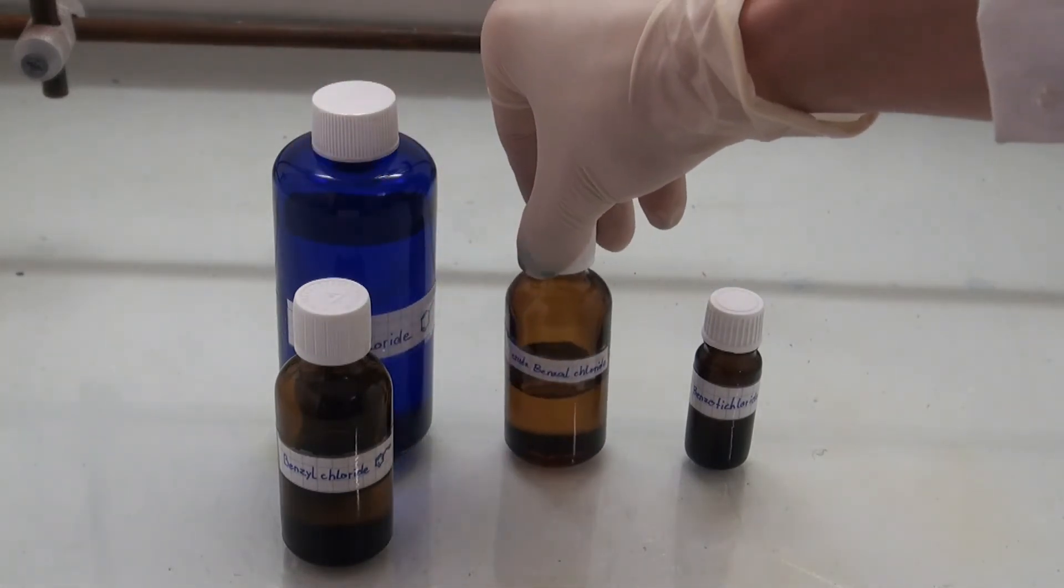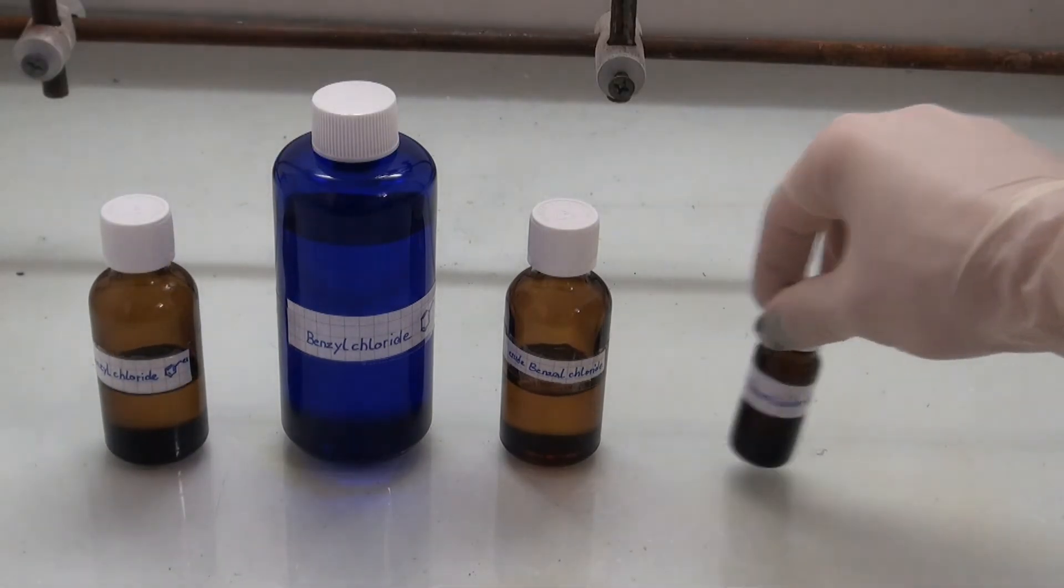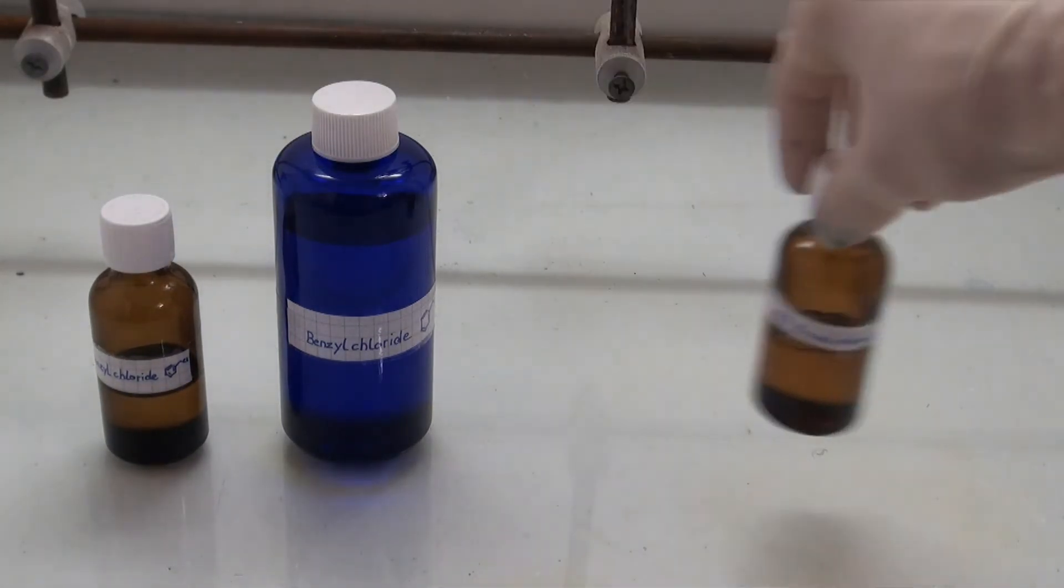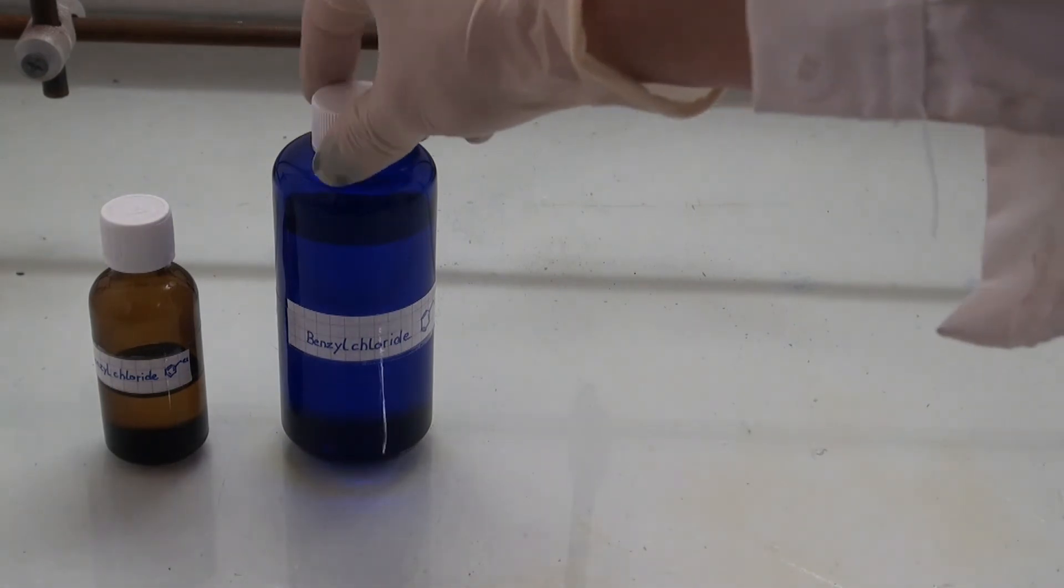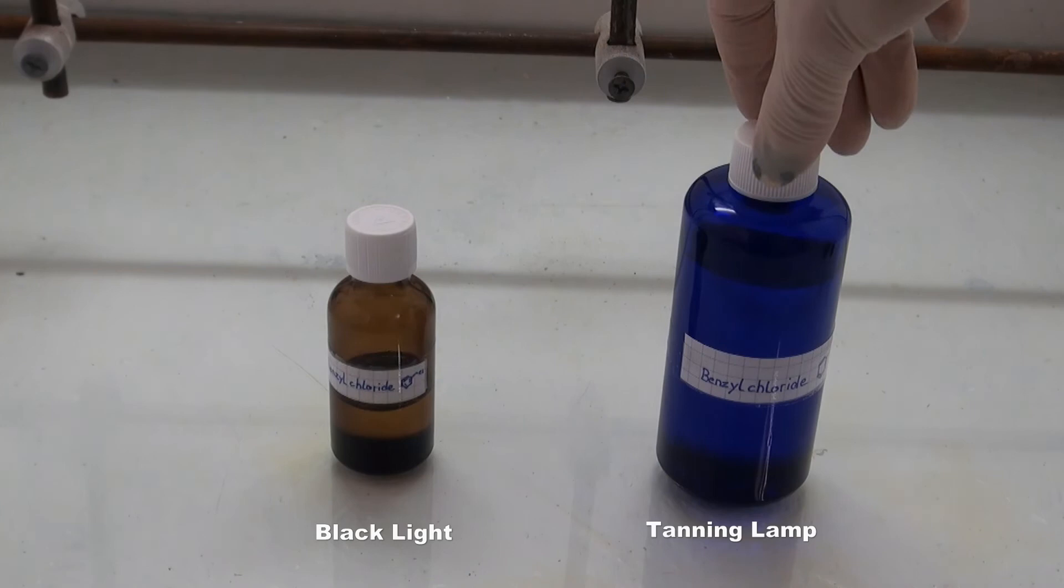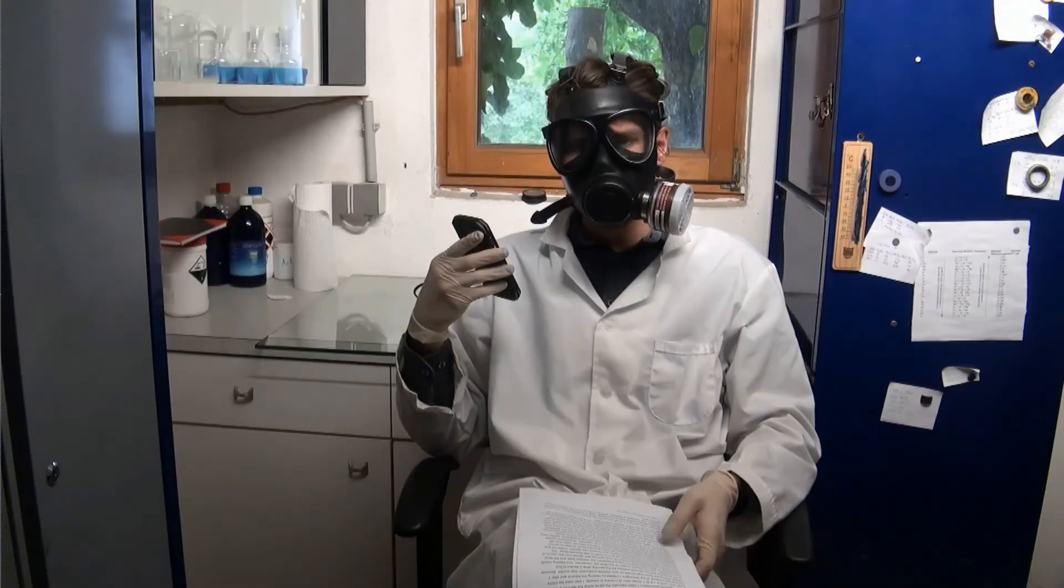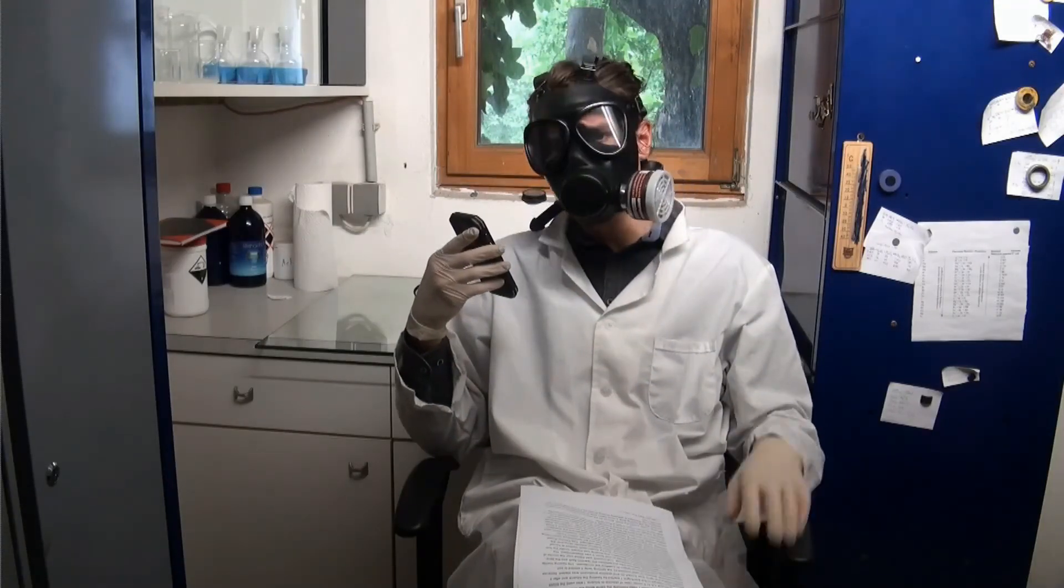Although I used double the molar amount for the second chlorination, I can clearly see that with the tanning lamp, a much higher yield of chlorinated hydrocarbons was obtained. The black light is definitely working as well, but it is a lot weaker than the tanning lamp. I hope you liked my video. Bye.